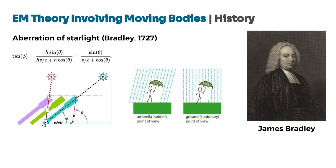The development of electromagnetic theory and the understanding of the interaction of light with moving objects have a rich history that dates back to the 18th and 19th centuries. Key contributions came from several scientists who studied the effects of light's interaction with moving observers, mediums, and objects. The phenomenon of starlight aberration was first discovered by James Bradley in 1727. Bradley observed that the apparent position of stars changes slightly due to the motion of the Earth. This effect, known as stellar aberration, occurs because the motion of the Earth alters the angle at which light from stars enters the telescope.